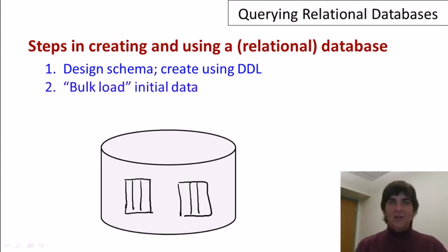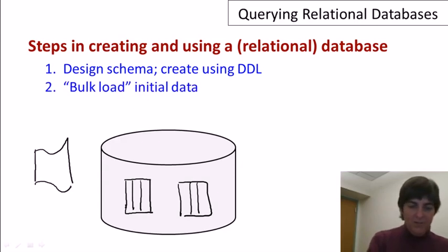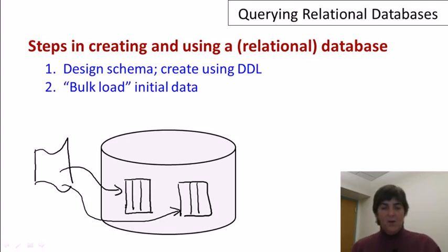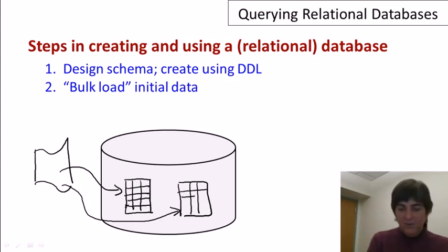Once that's ready, the next step is to load up the database with the initial data. It's fairly common for the database to be initially loaded from data that comes from an outside source. Maybe the data is just stored in files of some type and then that data could be loaded into the database. Once the data is loaded, then we have a bunch of tuples in our relation.